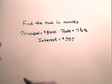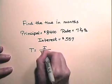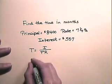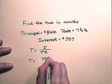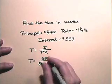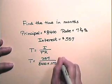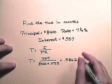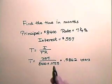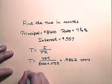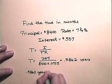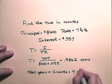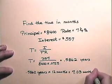Now let's find the time in months. Time is interest divided by principle times rate. The principle is $8,400, the rate is 7 and one-fourth percent, and the interest is $357. So the time is 357 divided by 8,400 times 0.0725. We calculate this fraction and get 0.5862 years. Since time is always in years, we multiply 0.5862 years times 12 months to obtain approximately 7.03 months.